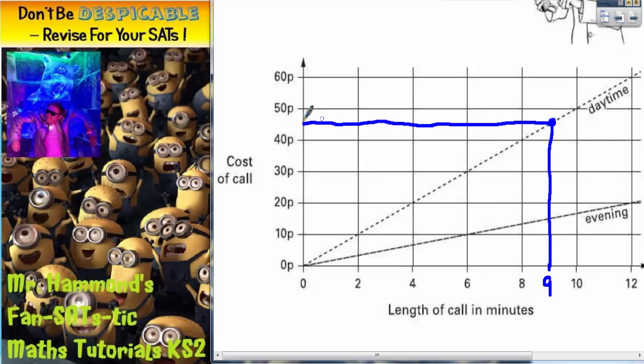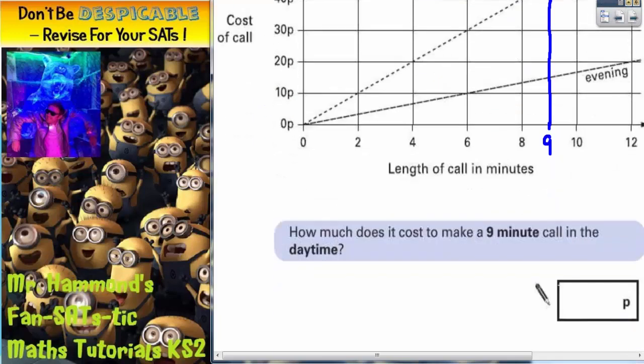Now you can see that that is slap bang in the middle between 40p and 50p, so that would be 45 pence because 45 is in the middle of 40 and 50. So the answer is 45 pence.